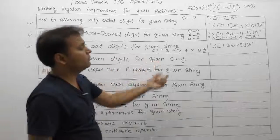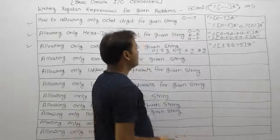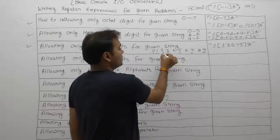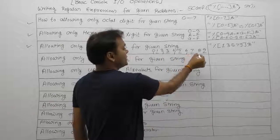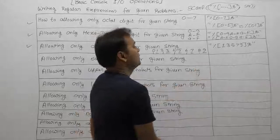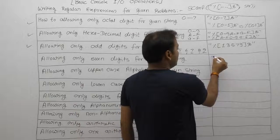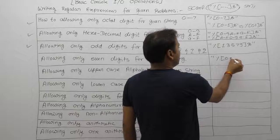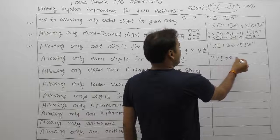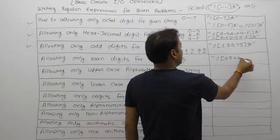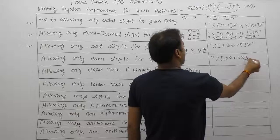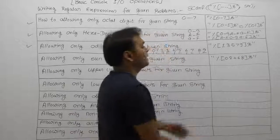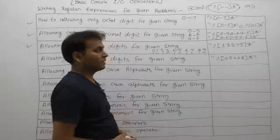Similarly, for allowing only even digits, the even digits are 0, 2, 4, 6, and 8. Accordingly, the corresponding regular expression is: percent, square bracket, 0, 2, 4, 6, 8, closing square bracket, 's'. This is the regular expression for reading only even digits.